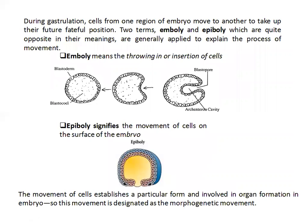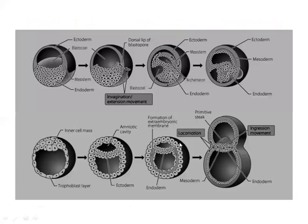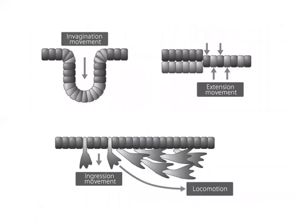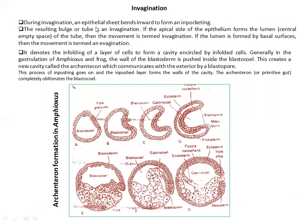During the course of their movements, cells generate three germ layers, which is very important. There is an invagination occurring, with granules and blastocoel present.